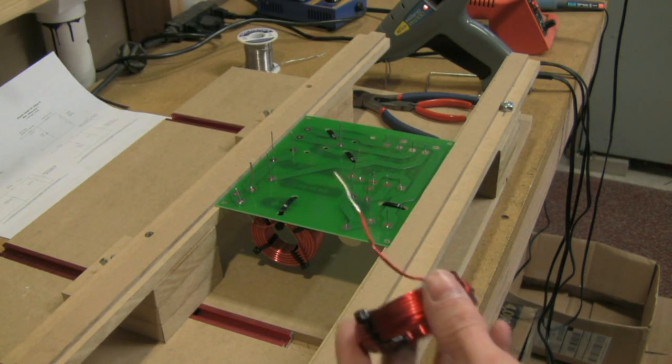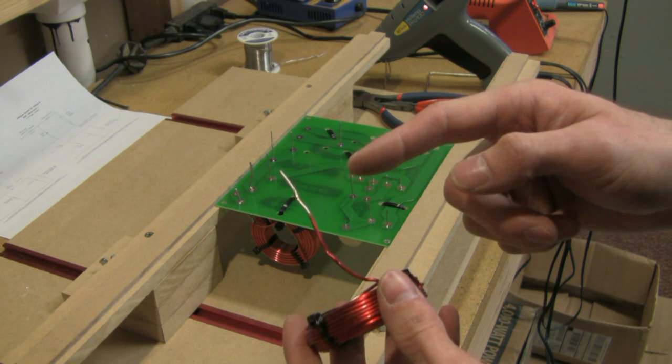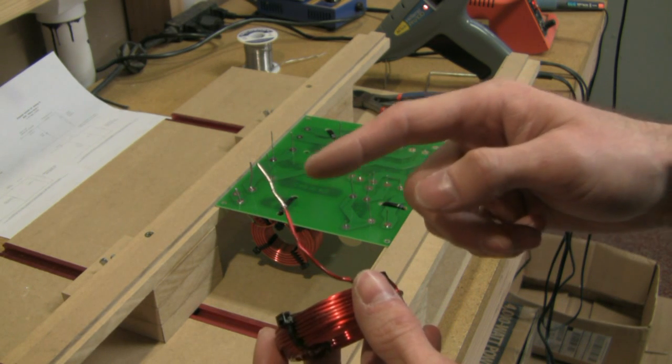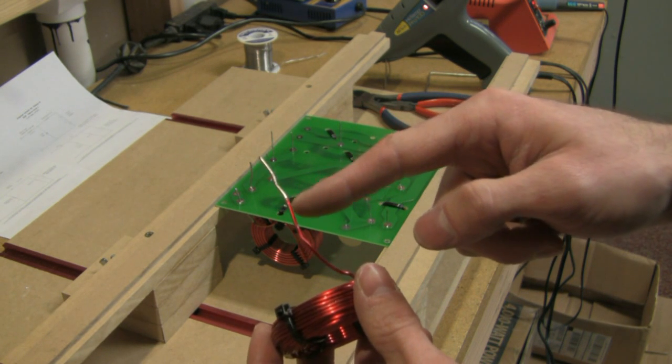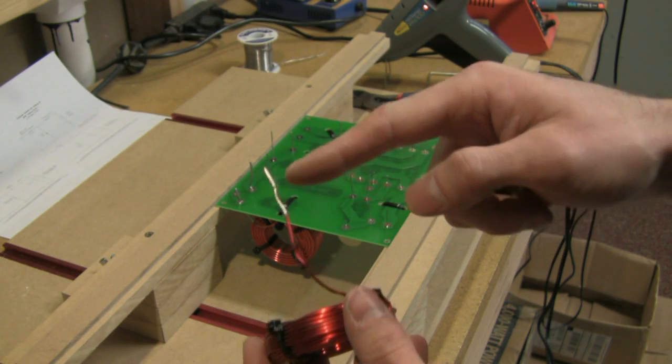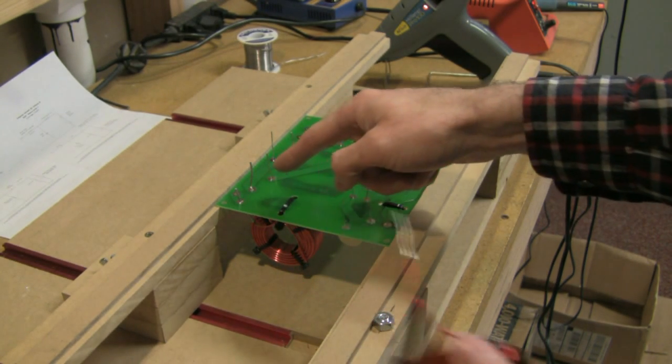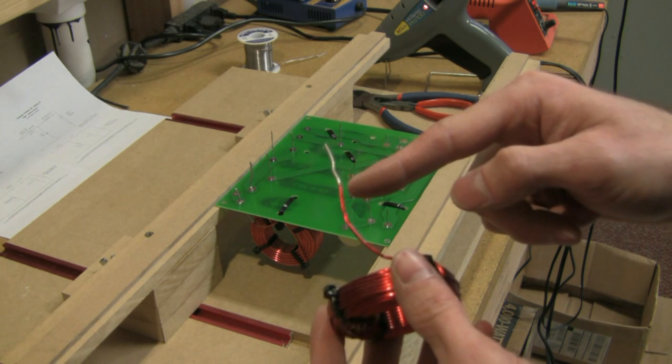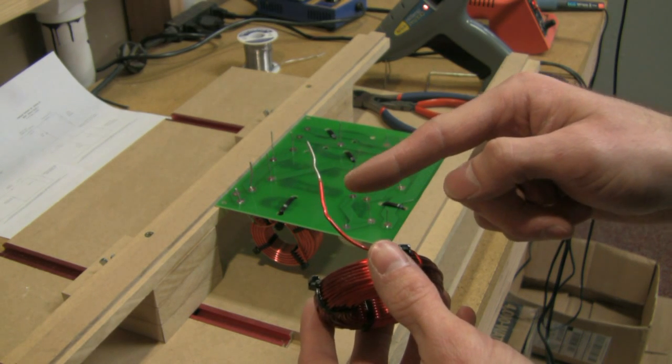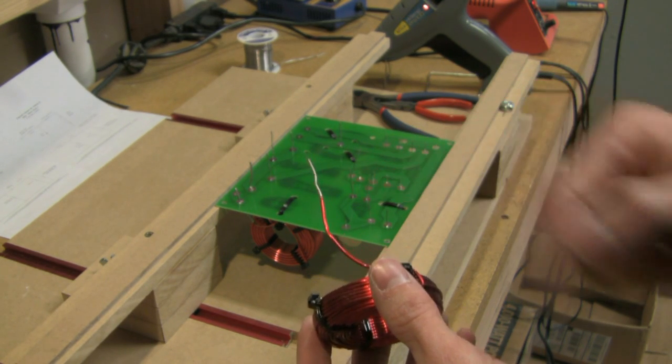Before you start soldering you want to check that your woofer inductor wire leads are not protruding through the board too far to the insulated portion of the wire. You only want the tinned portion of the wire through the holes on the bottom of the board. If the insulated portion is sticking through the solder will not adhere to it and you'll have a bad connection.